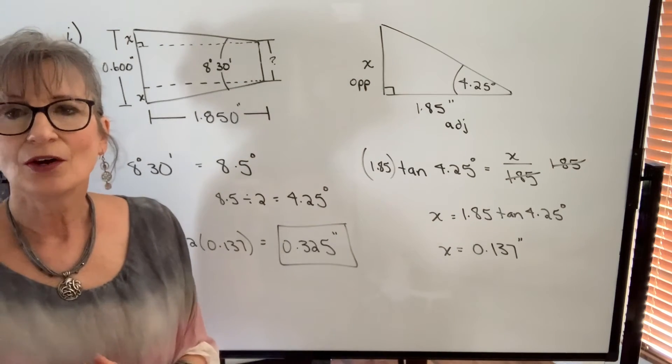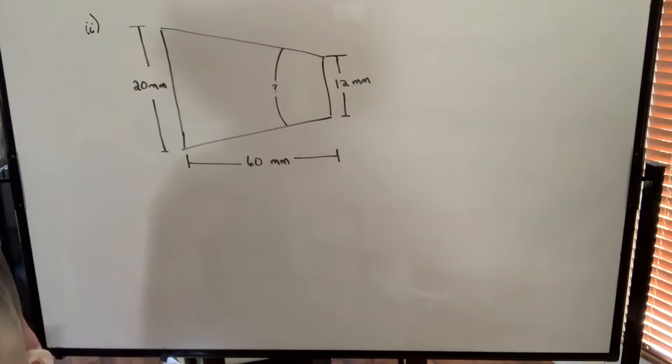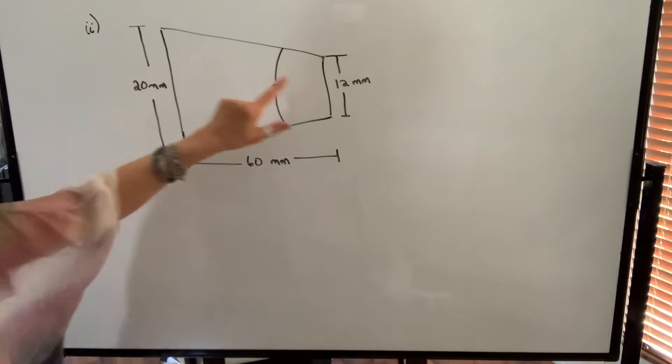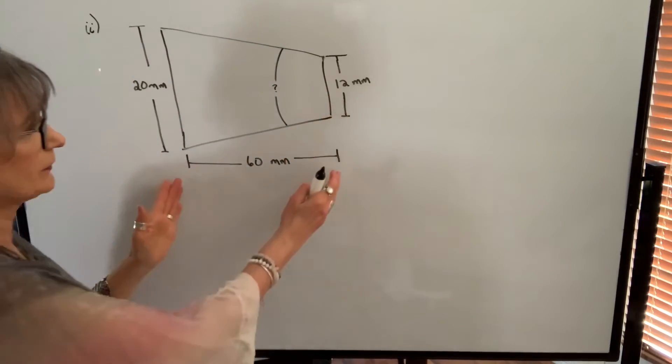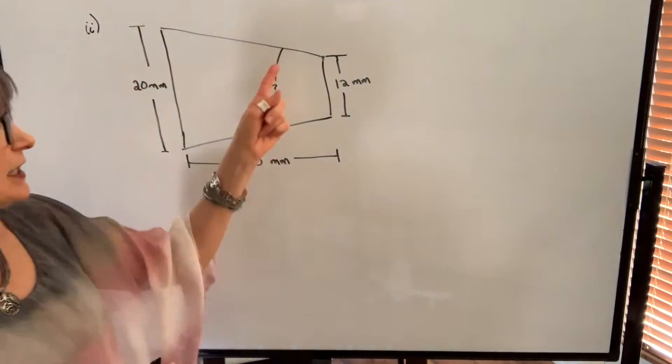Let's do an example now of finding the taper angle when we know all of the other dimensions. In my second example I know the large diameter and I know the small diameter and I know the length of the taper. I'm sorry it's not drawn to scale. What I need to find is the taper angle.